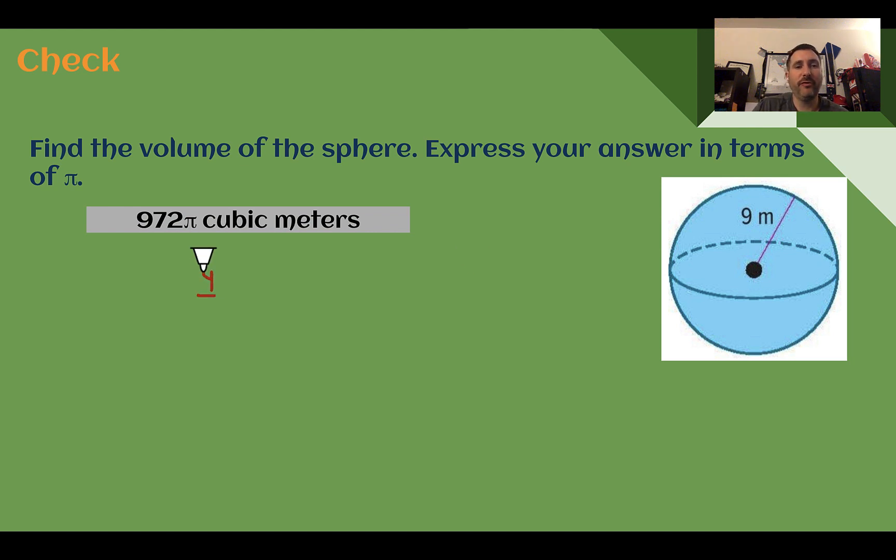Our formula 4 thirds pi times the radius cubed. So the radius is 9. 9 to the third power. And then 4 thirds is the same as multiplying by 4 and then dividing by 3. And we still need our pi symbol, but since it says in terms of pi, I can attach it at the end. So for this, I'm going to use a calculator. 9 times 9 times 9 is 729.